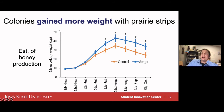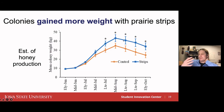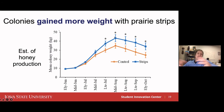We recently compared prairie strip farms to farms without them that had grassy field edges or grass waterways. When we placed our four-colony apiaries at these fields and tracked colony growth over time, early growth was numerically a little higher at the strip sites. But by the time we got to August — which is when we see our peak honey flow and would harvest honey — statistically we see significantly more honey in the hives at prairie strip sites.